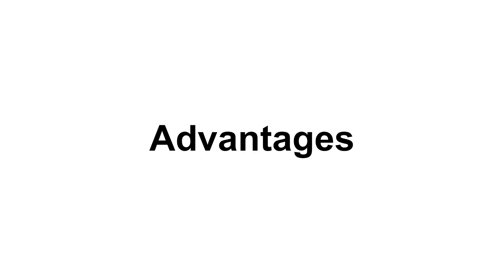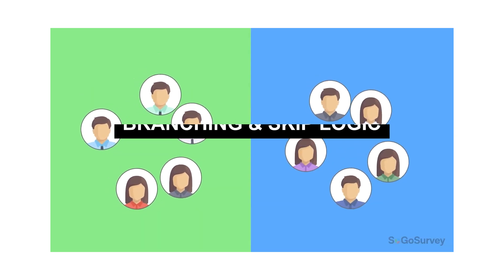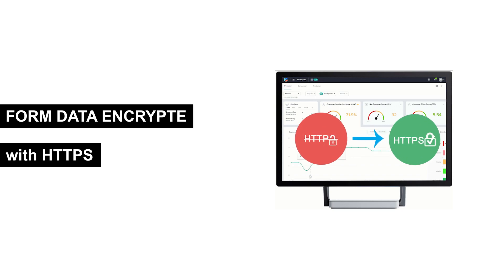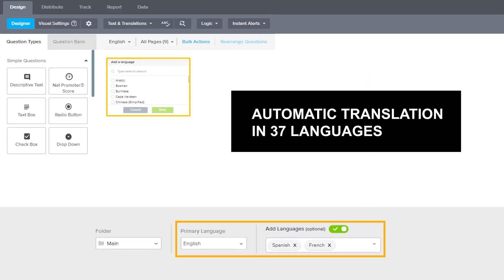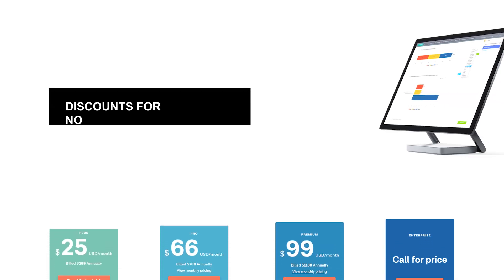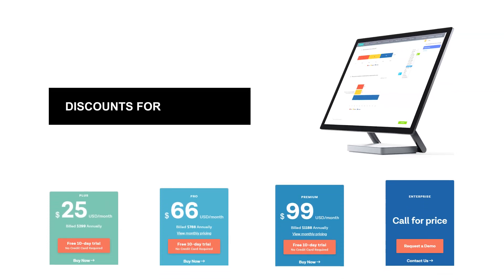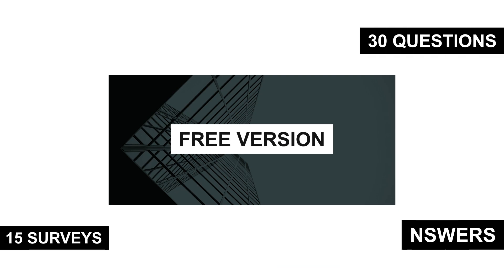Advantages: Branching and skip logic. Form data encryption with HTTPS. Automatic translation in 37 languages. Discounts for non-profit organizations. Free plan includes 15 surveys, 30 questions, and 110 responses.